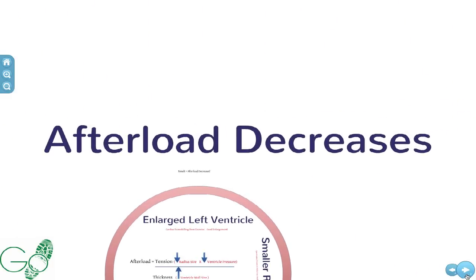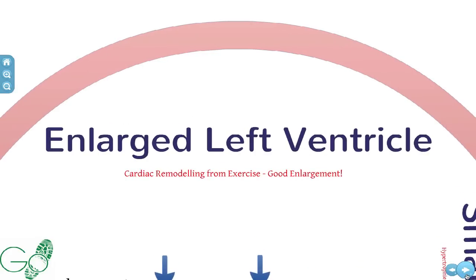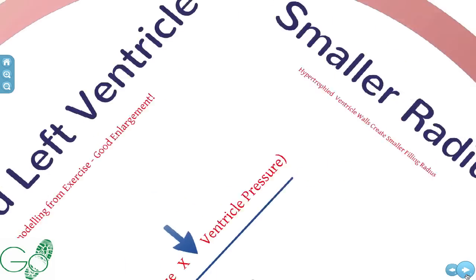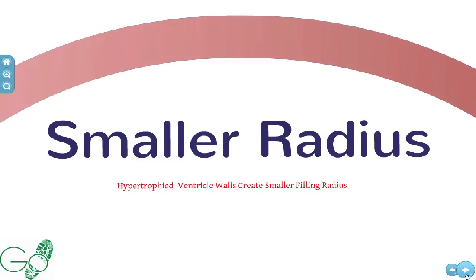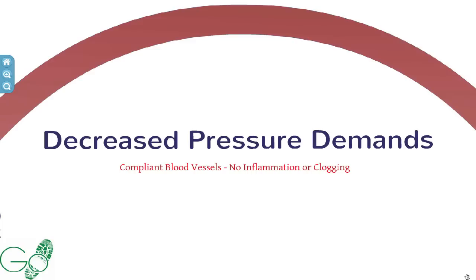Now let's look at a situation where afterload decreases. This person exercises regularly — running or lifting weights — and has undergone beneficial cardiac remodeling. They have a smaller ventricular radius due to hypertrophied ventricle walls, which is in stark contrast to the previous example. A fit, healthy heart produces a smaller filling radius, which is desirable, along with decreased pressure demands because of more compliant, healthy vasculature.